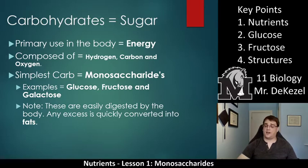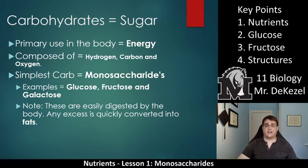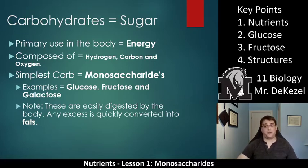Some examples of monosaccharides are glucose, which you might have heard of — that is sugar — fructose, which is kind of a hidden sugar, and galactose, which is a little less common. These are easily digested by the body and any excess is quickly converted into fat. So if you have too much sugar in your diet, your body converts it into fat for storage. If the primary use is energy, storing it means we can use it for energy later.